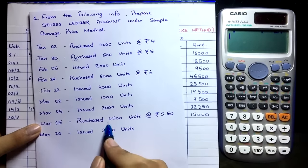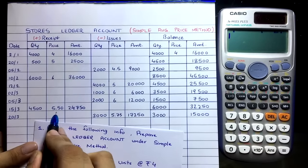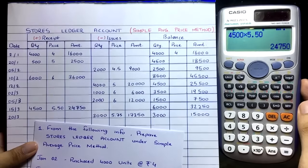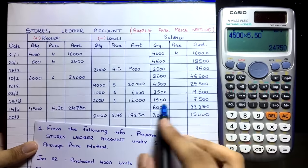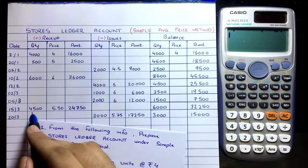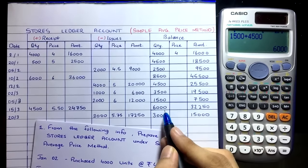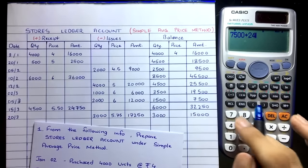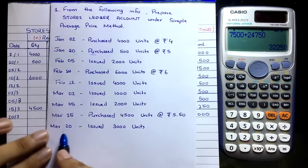On March 15th, purchased 4500 units at ₹5.50. Receipt: 4500 × ₹5.50 = ₹24,750. Combine with the balance: 1500 + 4500 = 6000 quantity; ₹7,500 + ₹24,750 = ₹32,250 total cost. So now in the warehouse we have 6000 quantity of ₹32,250 cost.